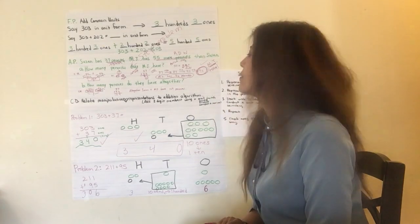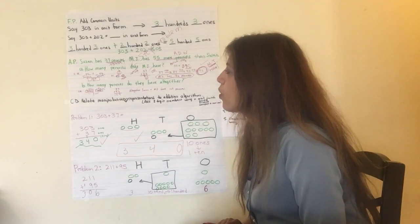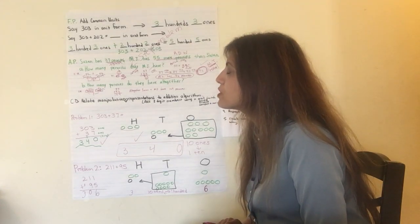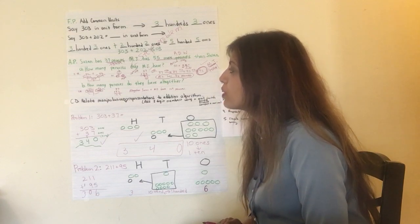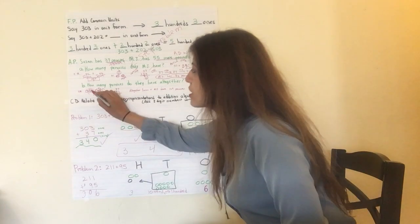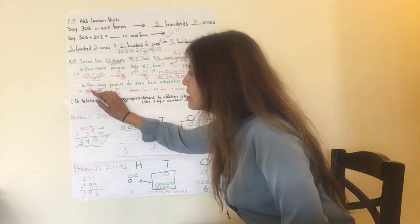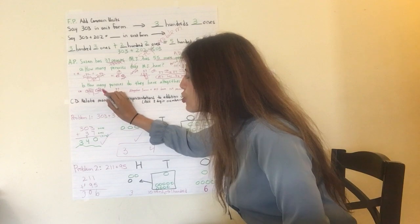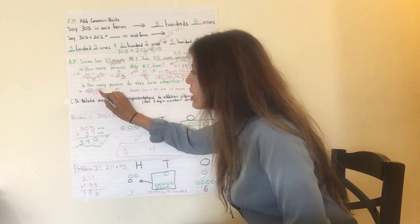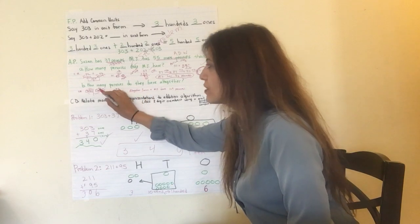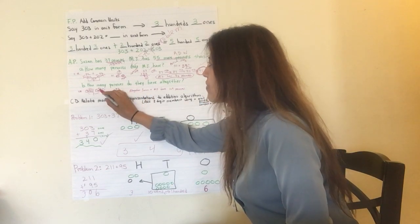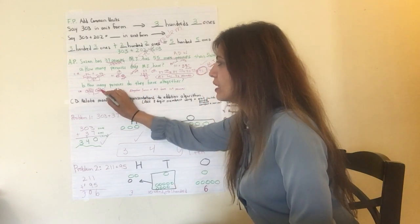So, it always helps to represent it using the conceptual way. Use a conceptual representation that will help you visually see it. So, there's Susan's 37 pennies. There's MJ's 92 pennies, right? That's Susan's total. That's MJ's total. That's what we're adding. We are not adding the 55, because the 55 is not a total for anyone, right?